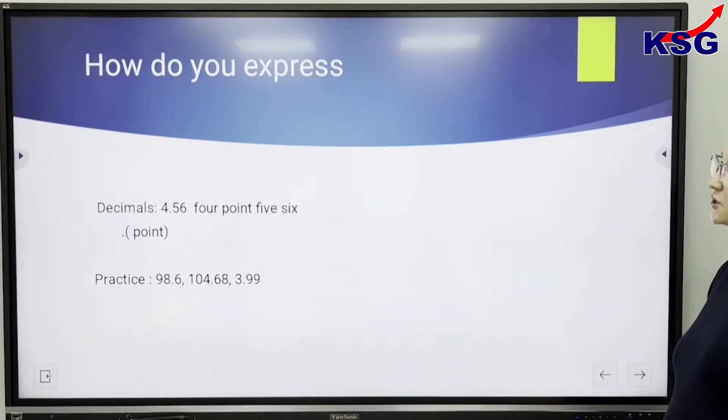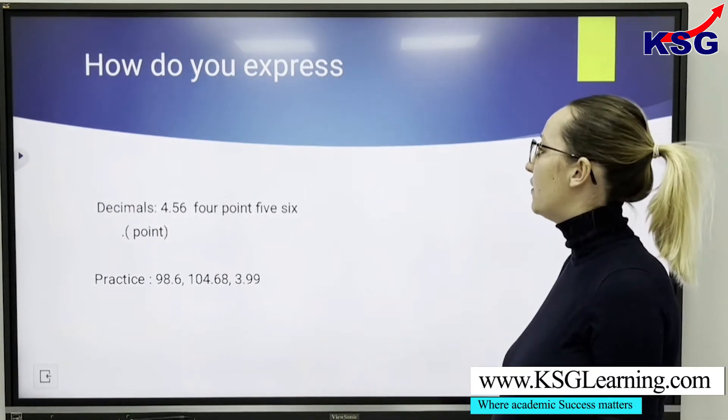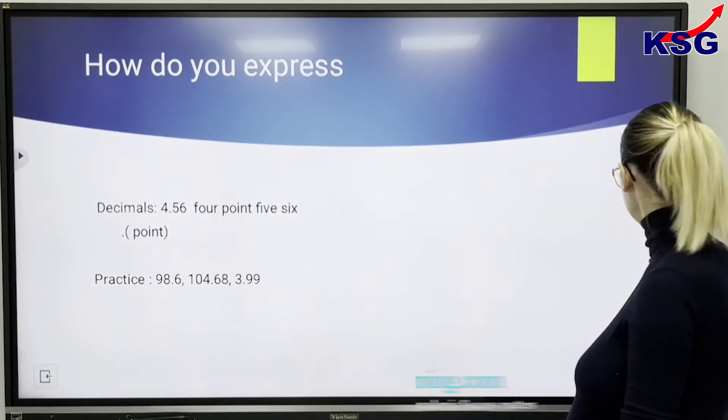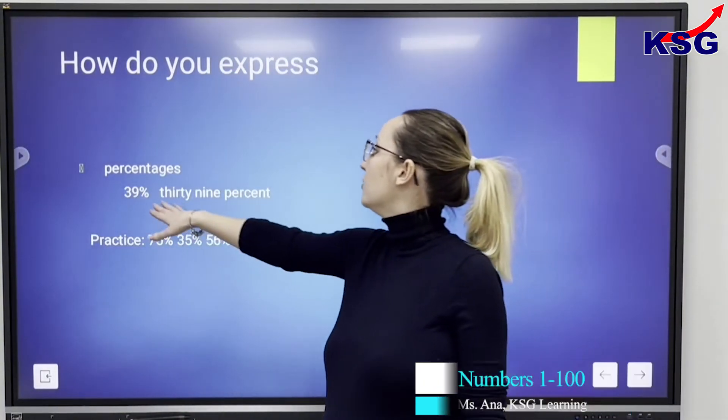How do you express decimals? 4.56. How do you express percentages? You have 39%.